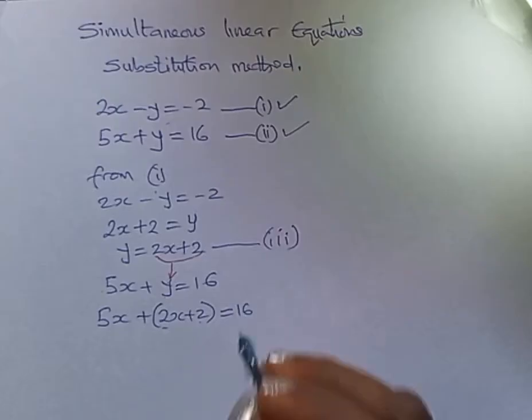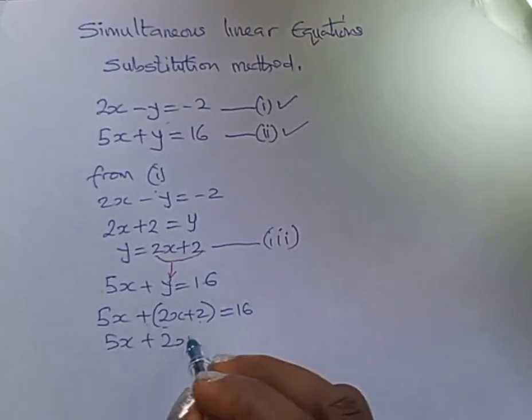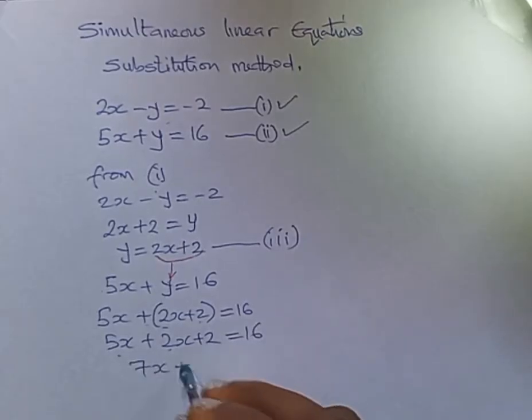Do this to check if it is minus so that you don't run into trouble. Opening the bracket won't change anything, so you still have this. This and this becomes 7x, then we take 2 to the other side, that makes 16 minus 2.